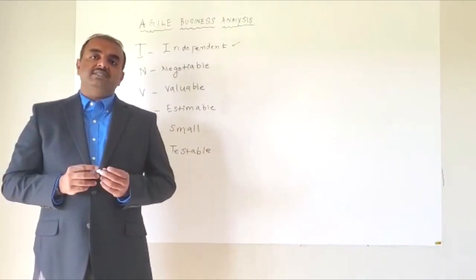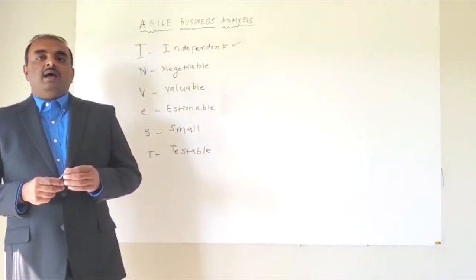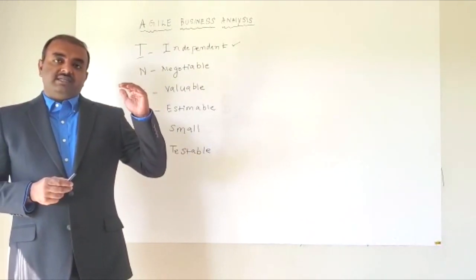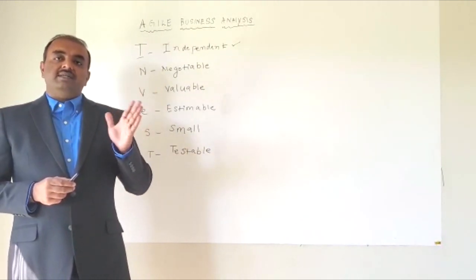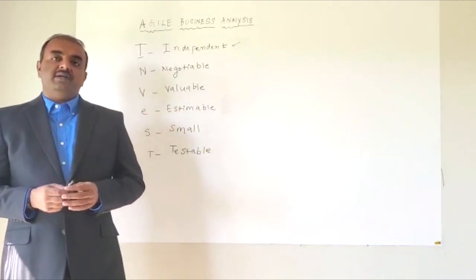So now what happens is a developer or a development team at the end of the sprint, they come to you and say, I am able to complete acceptance criteria one and the acceptance criteria two, but I could not complete the acceptance criteria three for so many reasons.